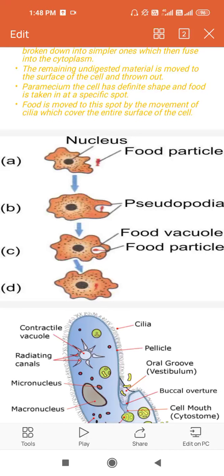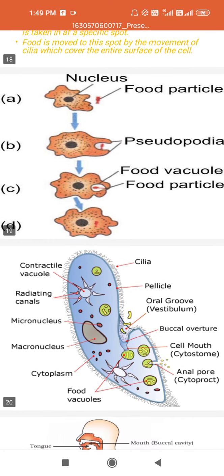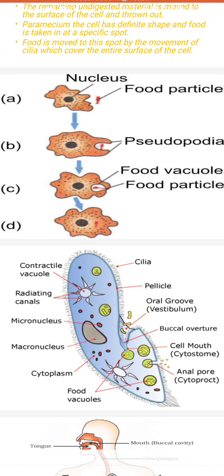Hi guys, today we are going to see Class 10 Chapter 6, that is Life Processes. In class we have seen two images just for the revision. We will now see the diagram of amoeba.